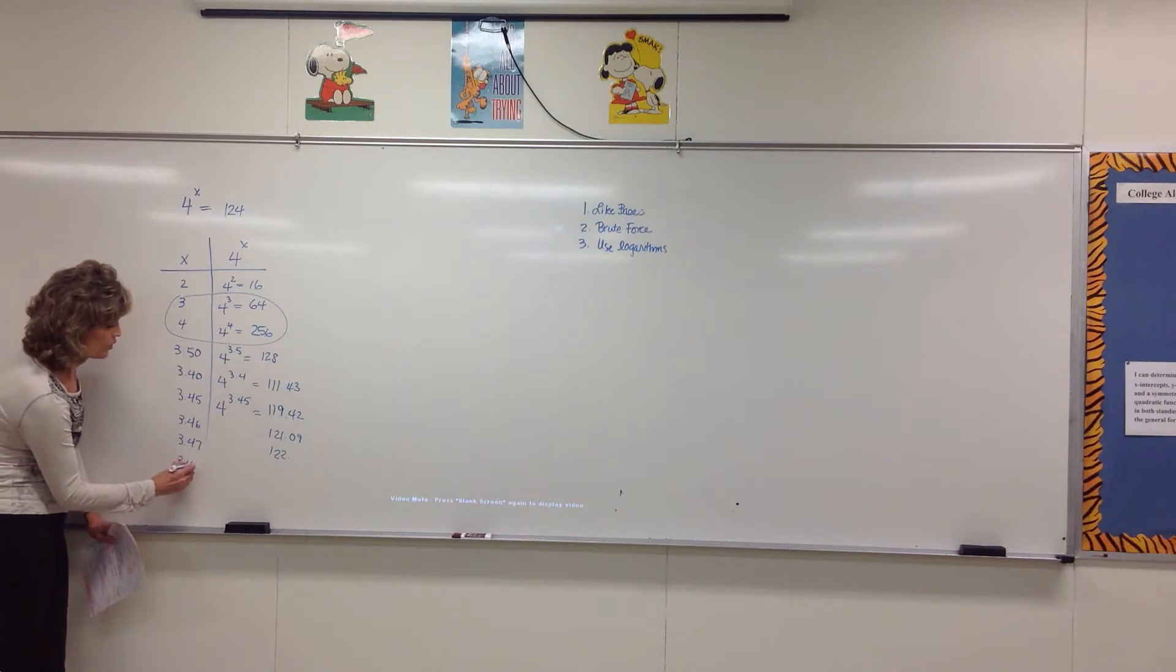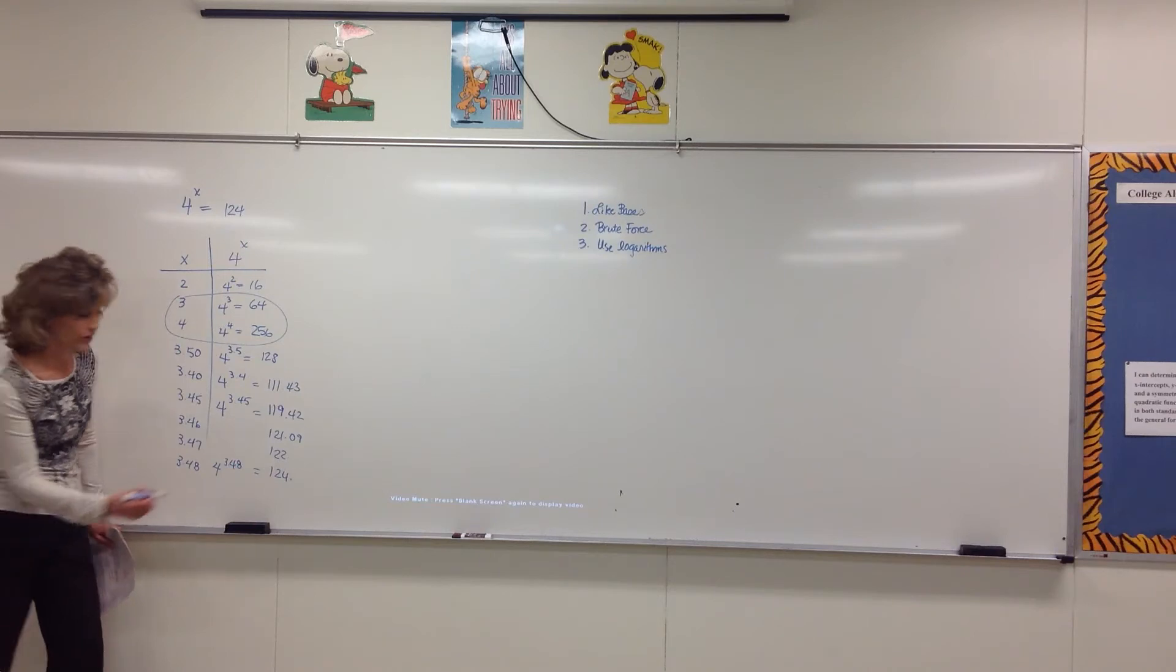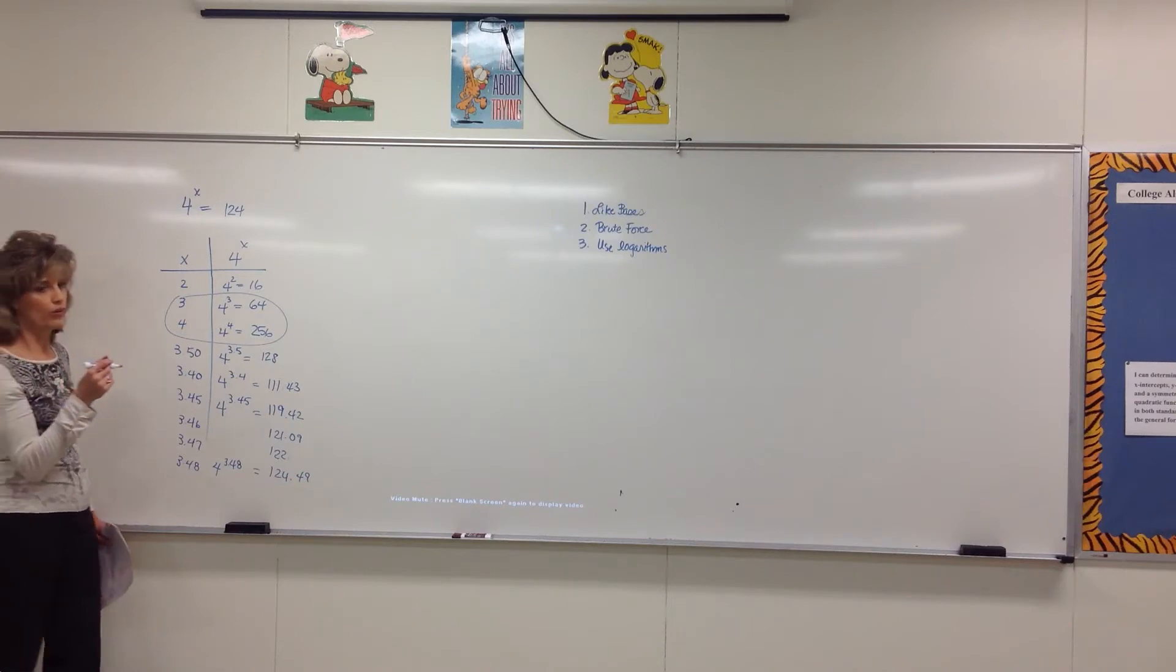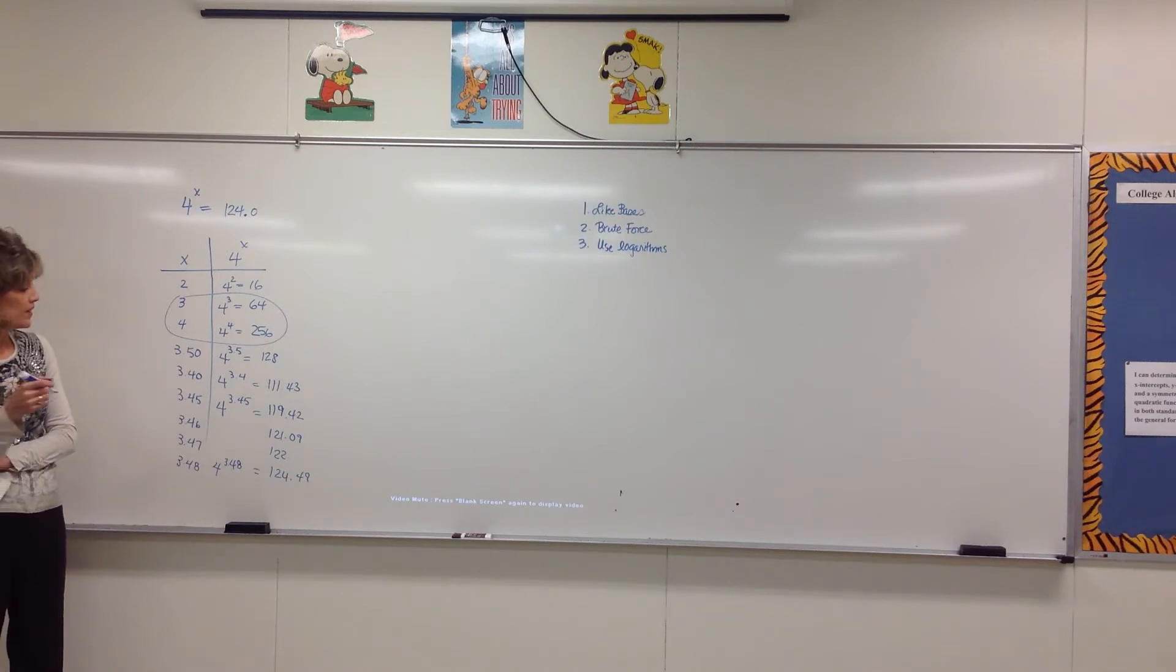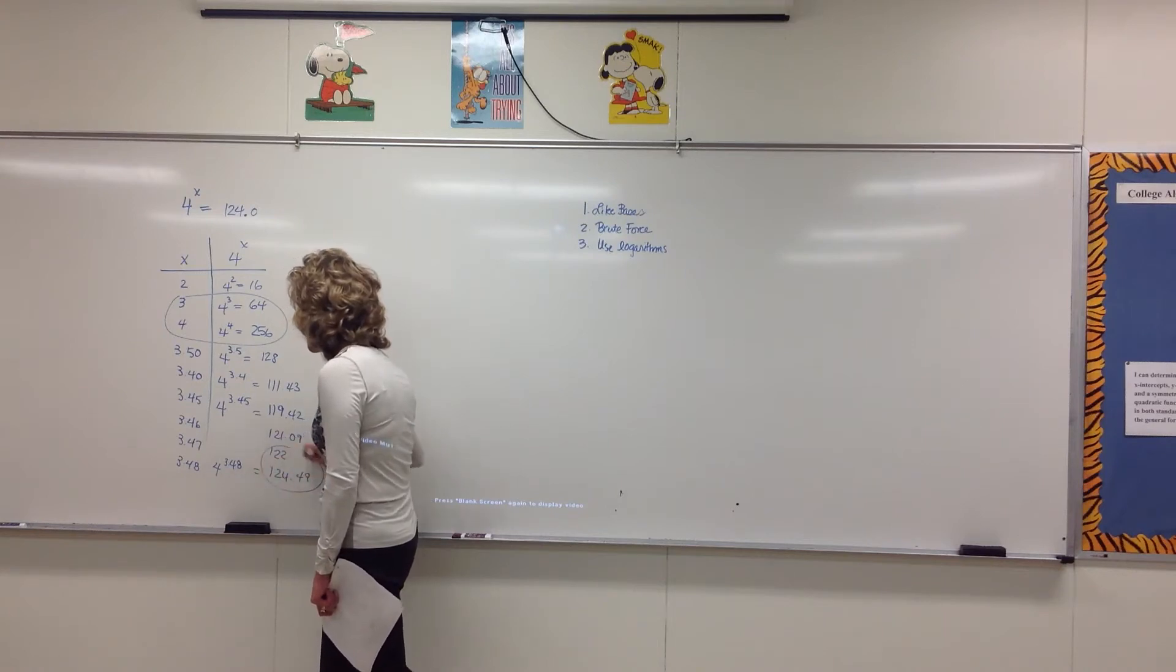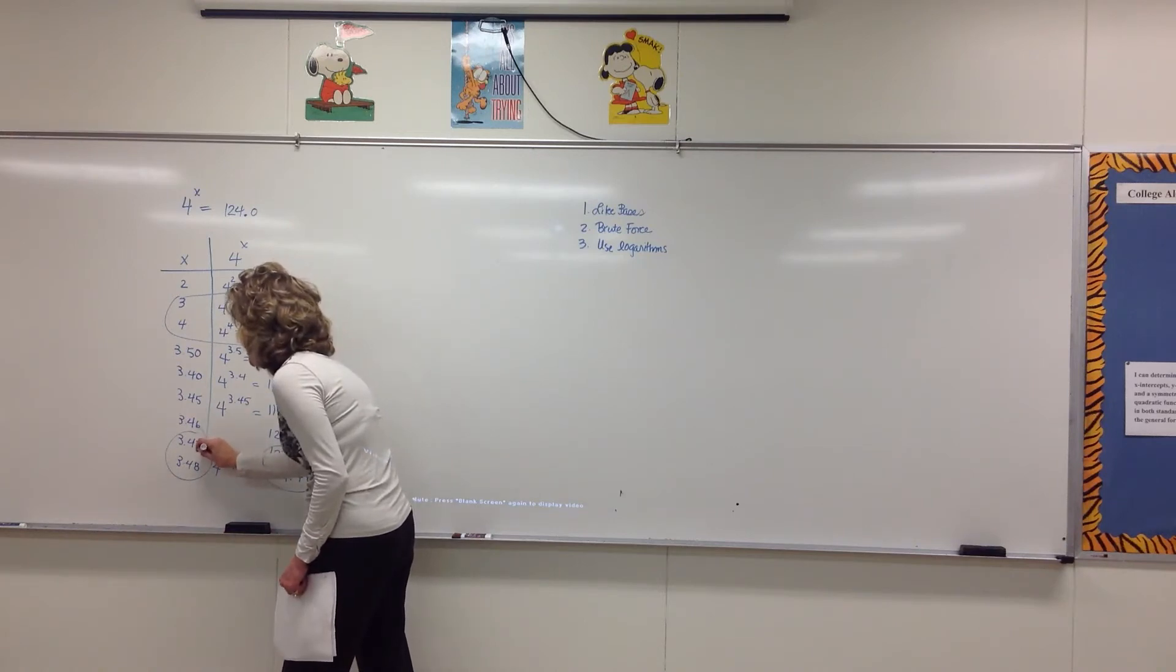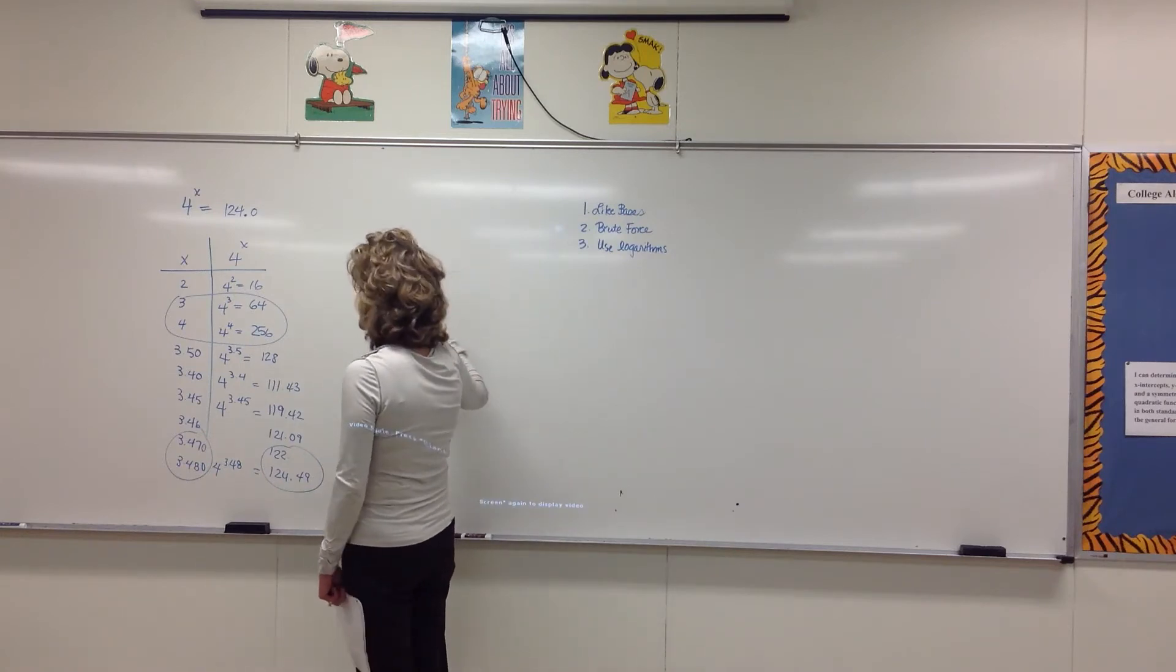Okay, so let's try 3.48. What does that give us if you do 4 to the 3.48 power? 124.99. That's getting pretty close, but not close enough. Because I want you to keep working until you can give me the first decimal place as a zero. So we know that 3.47 is a little too small and 3.48 is a little too big, because we need 124.0. And so let's try something. Let's think of this as 3.470 and 3.480.